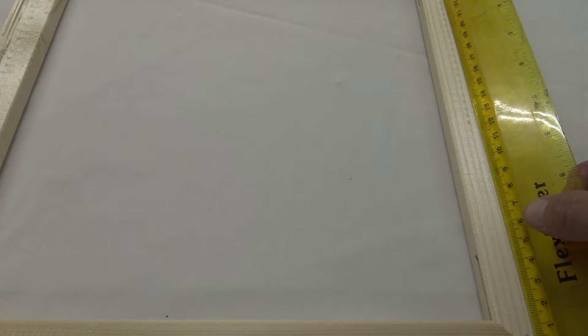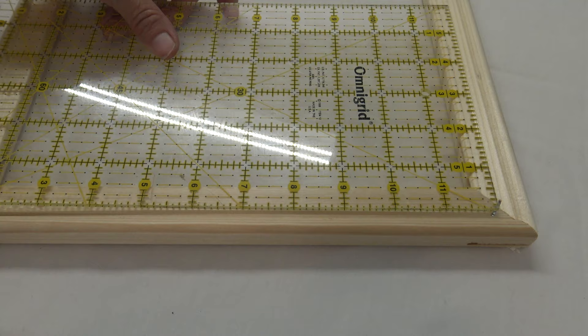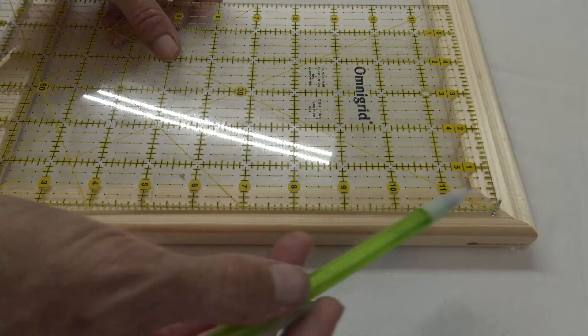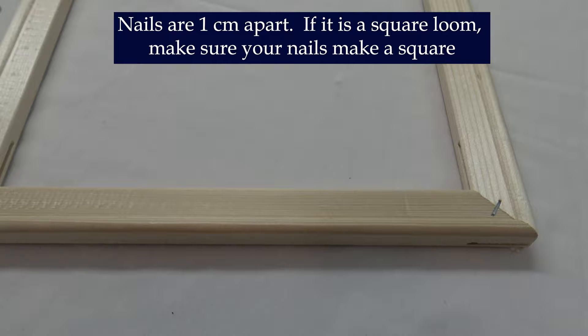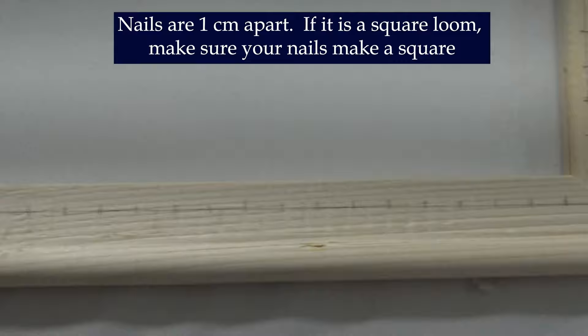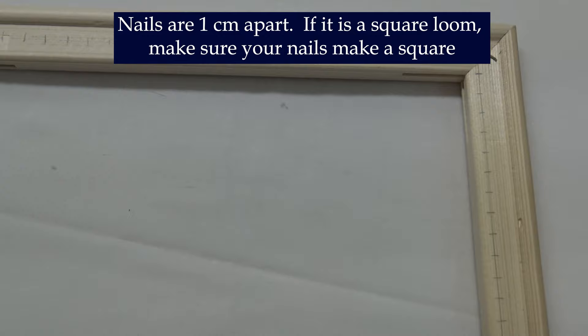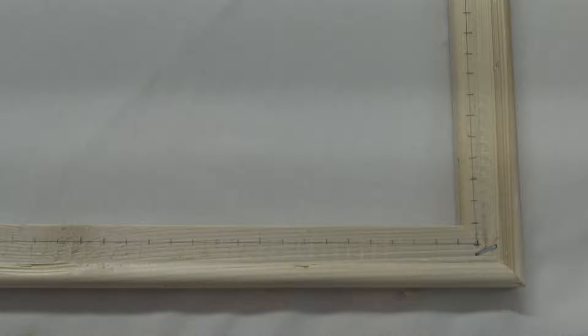In whatever size frame you have, just mark it so that it is a perfect square. We also want them to be in a straight line, so I am going to take a straight edge and mark a line where the nails are going to go and put one in each corner. I've marked a straight line all the way around and have a square with tick marks every centimeter. This one happens to be 27 centimeters square, so Ross is going to drill holes there and I will put in the nails.